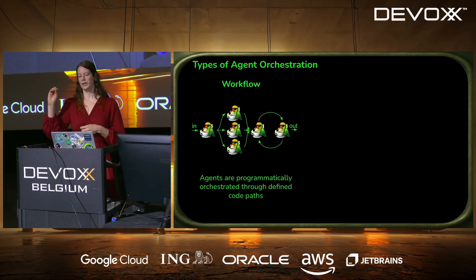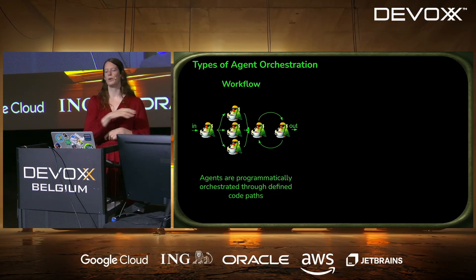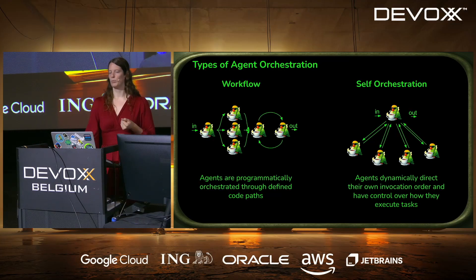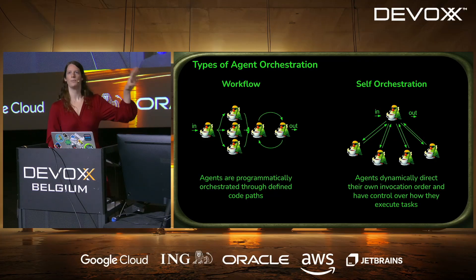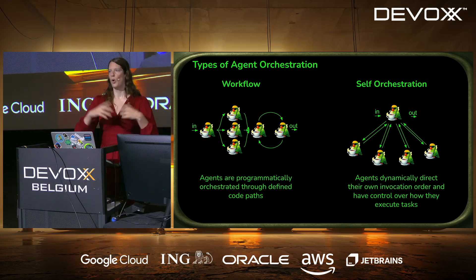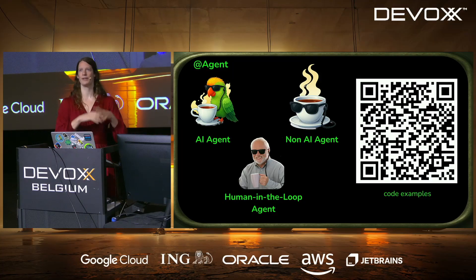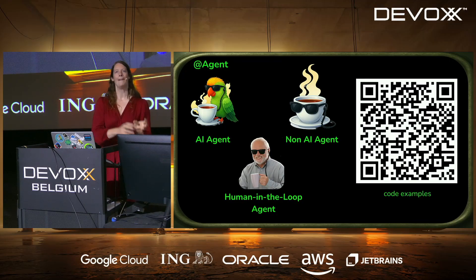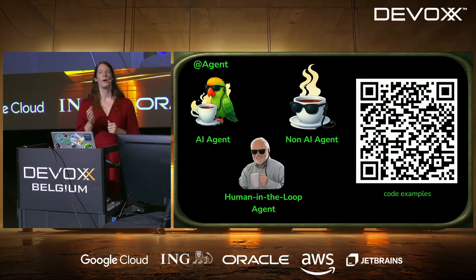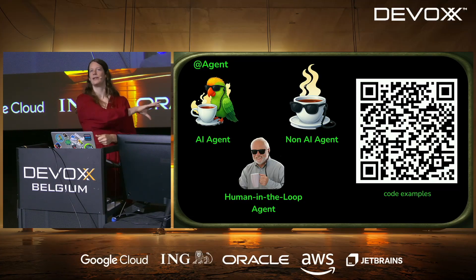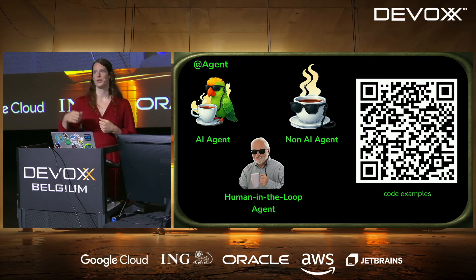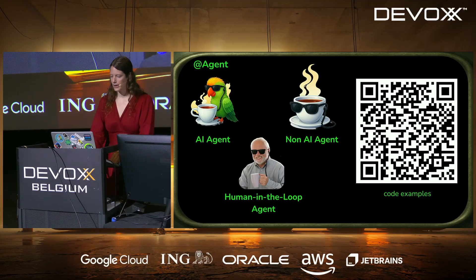The types of agent orchestration LangChain4j Agentic supports include: workflows, where you deterministically define in code which agent gets called in which order and which outputs feed into the next agent; and more real agentic self-orchestration, where a supervisor agent dispatches tasks to sub-agents when needed. We also support AI agents with an LLM at their core, non-AI agents which are just normal code wrapped in an agent, and human-in-the-loop agents for cases where you need human interaction.